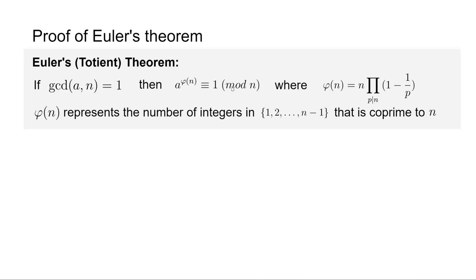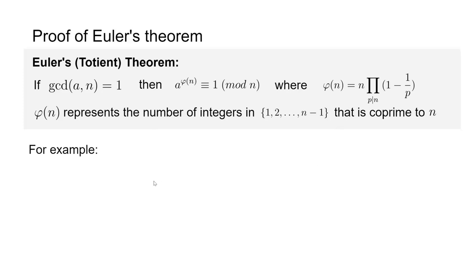Before we prove that, we're going to do two things. First, we're going to prove this theorem — and we can actually prove it even without the closed form of φ(n). But for completeness, we will also show why φ(n) has this closed form. Before we do that, we'll look at some examples.